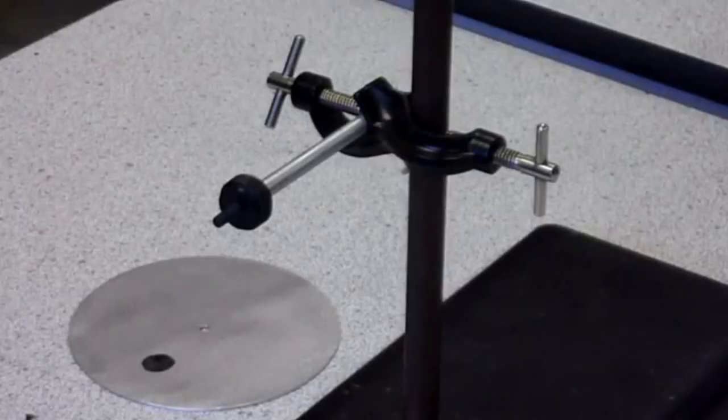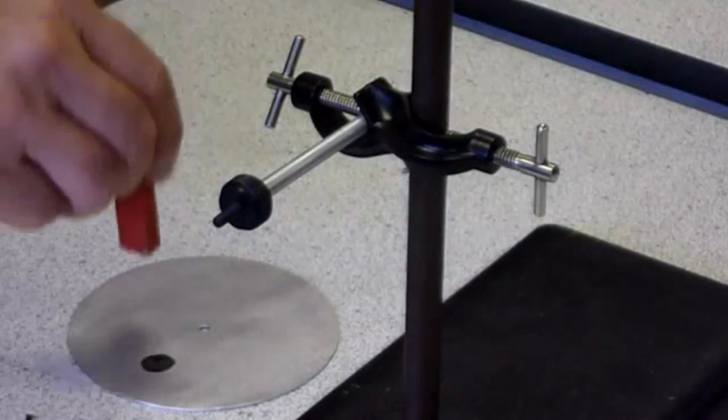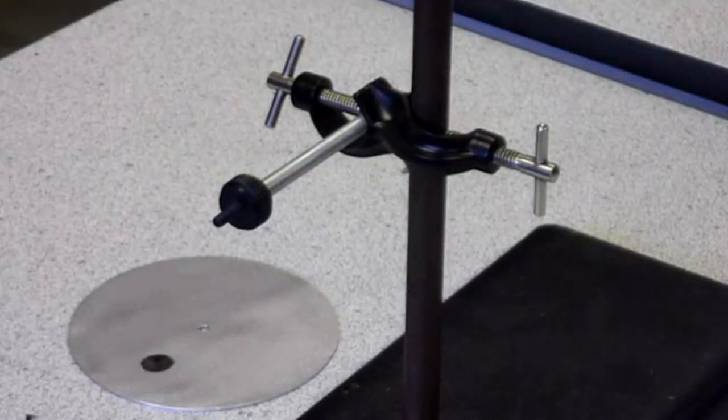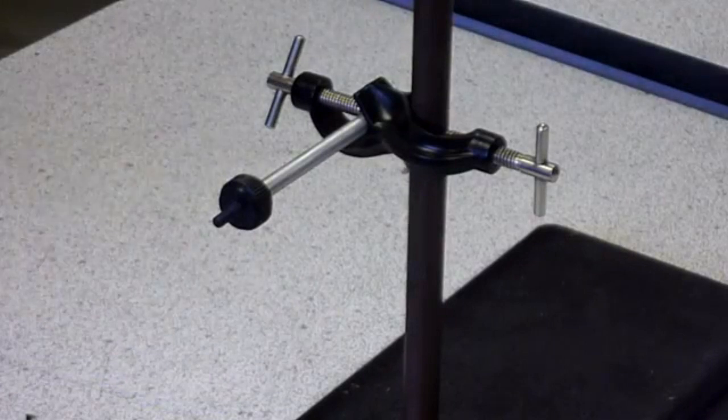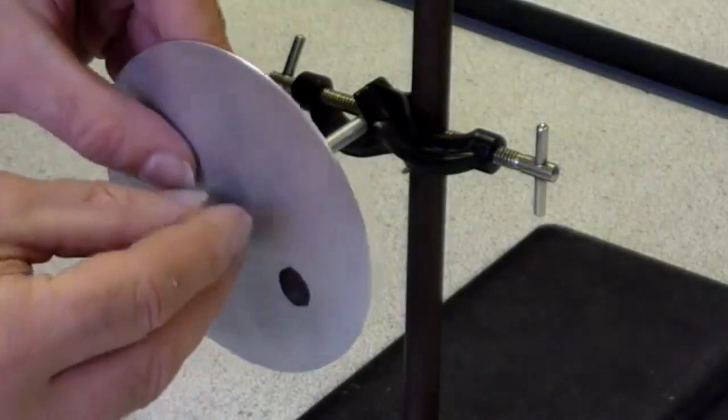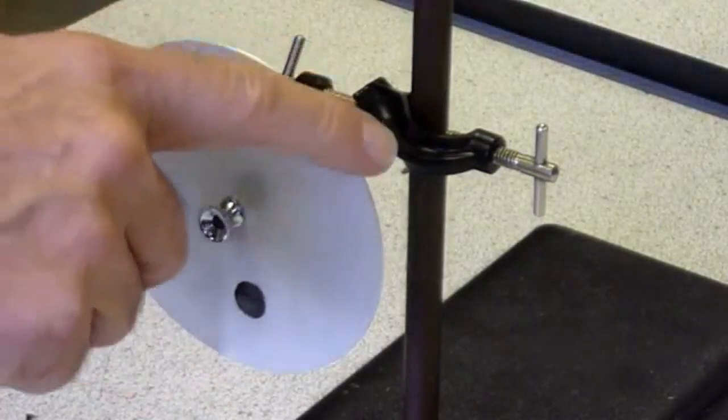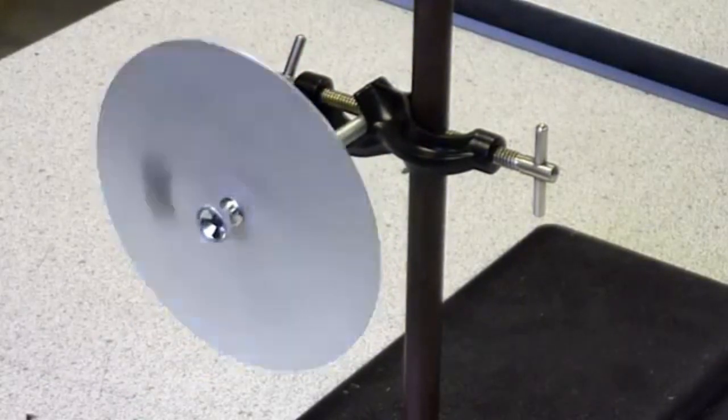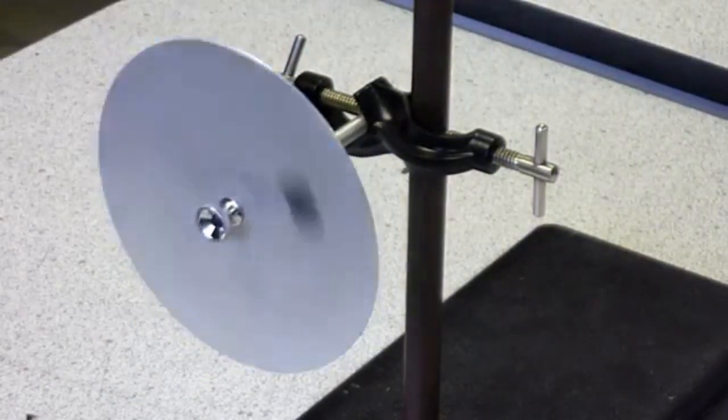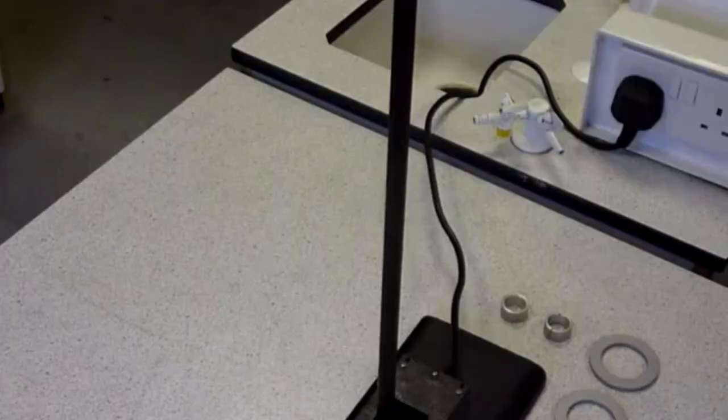This is the principle of electromagnetic braking. The aluminium disc spinning in a magnetic field generates a current. This generated current produces a magnetic field which slows down the disc.